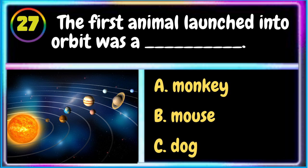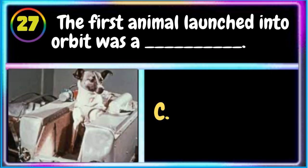27. The first animal launched into orbit was: A. Monkey B. Mouse C. Dog. The correct answer is C. Dog.